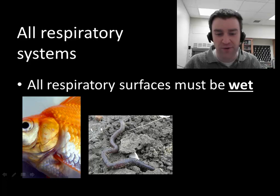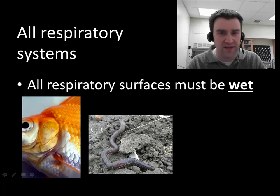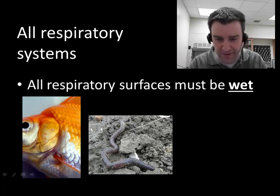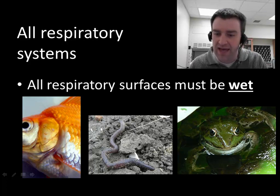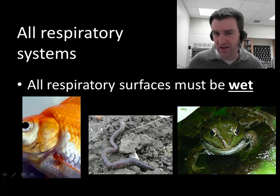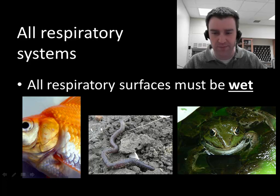For some animals like earthworms, they can just keep their skin moist, so their skin is actually their respiratory surface — but they have to keep it wet enough to stay alive because some of it's going to evaporate into the drier air. Amphibians also have a respiratory surface on their skin, and they also have lungs, though not quite as well developed as those of reptiles, mammals, or birds.